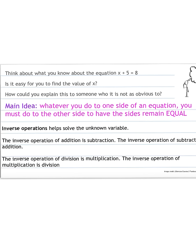A main idea: one thing we need to remember as we go through this lesson and throughout this unit is that whatever you do to one side of an equation, you must do to the other side in order to keep the sides equal. Think about your inverse operations from the last lesson — those will help you solve for the unknown variable.